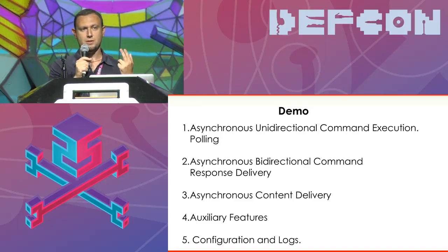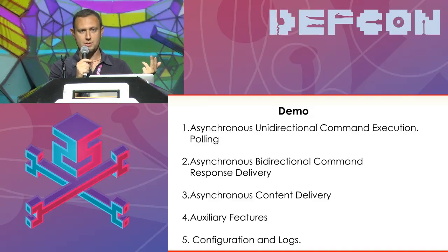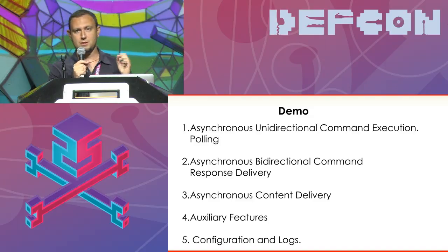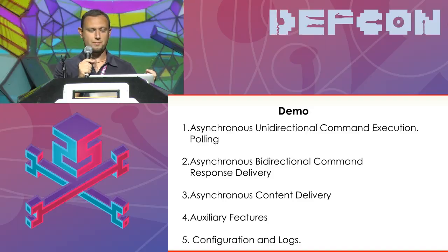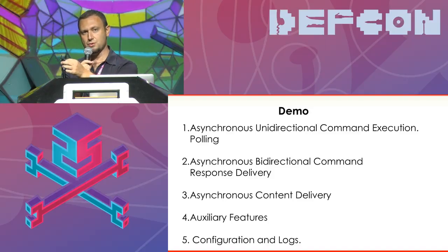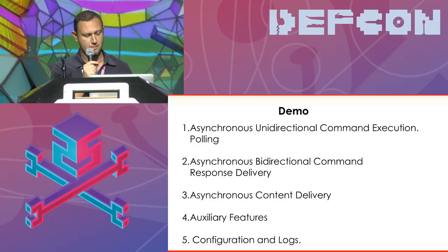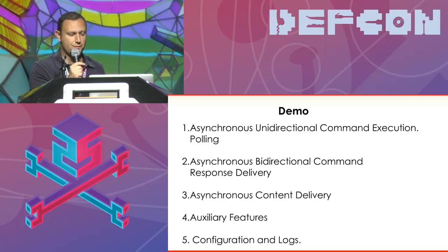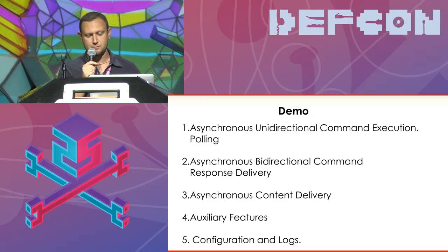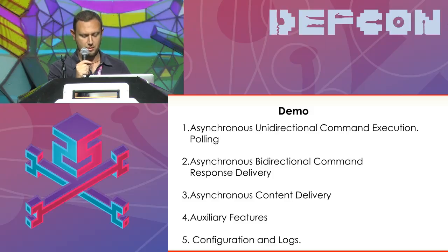The two phases are: a shell execution of commands on one side or the other, and content delivery. For example, for the red team, if you forgot your toolkit, you can go to your C2 through GitHub and bring it back on the inside. And then there are some features that fit into this model of Octahook configuration and logs.